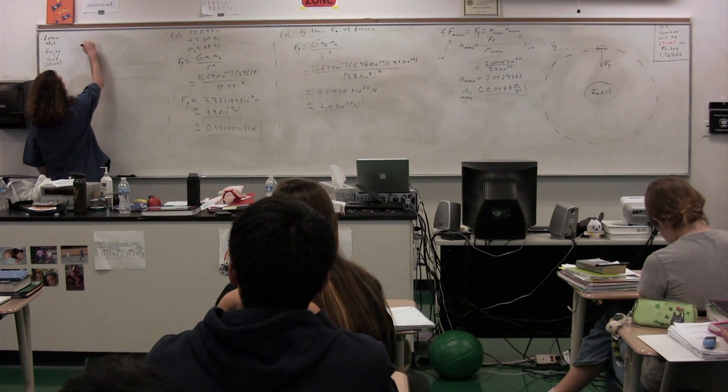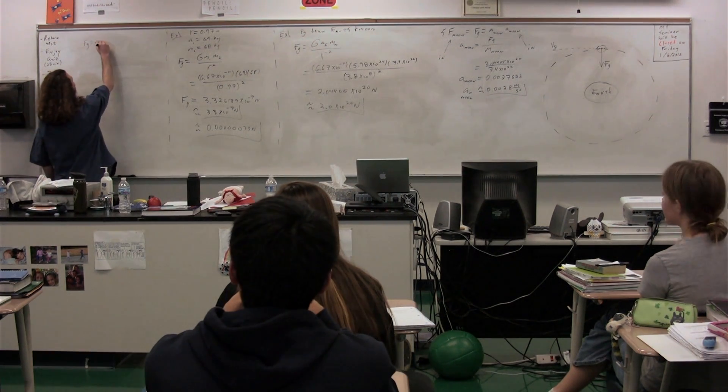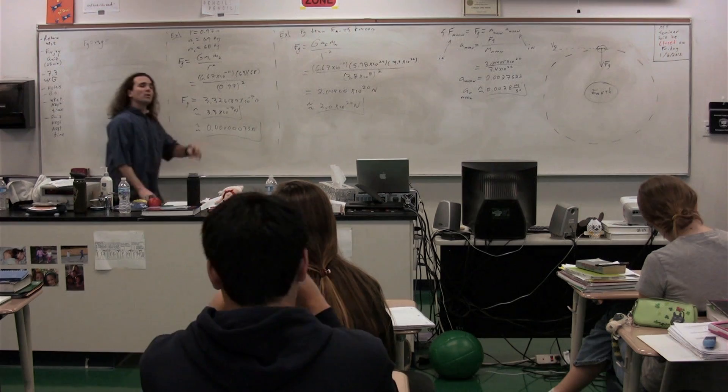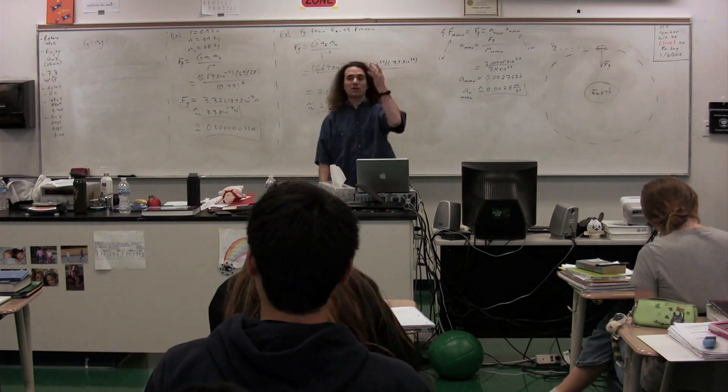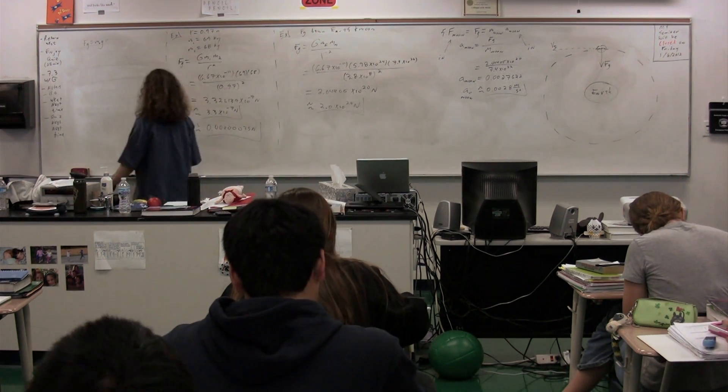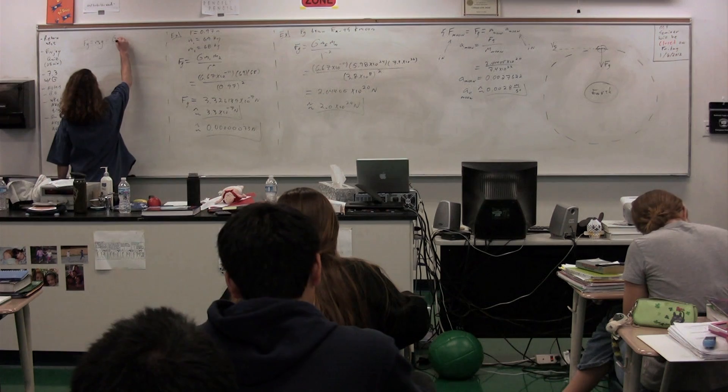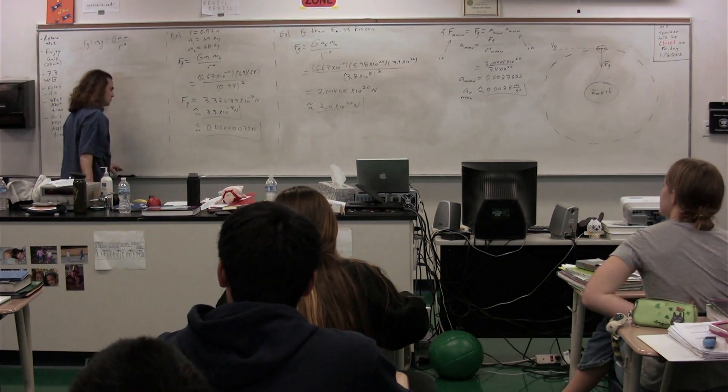So we have the force of gravity, which we know is equal to the mass of the object times little g. But we also have this new equation, which is big G times mass 1 times mass 2 divided by r squared.